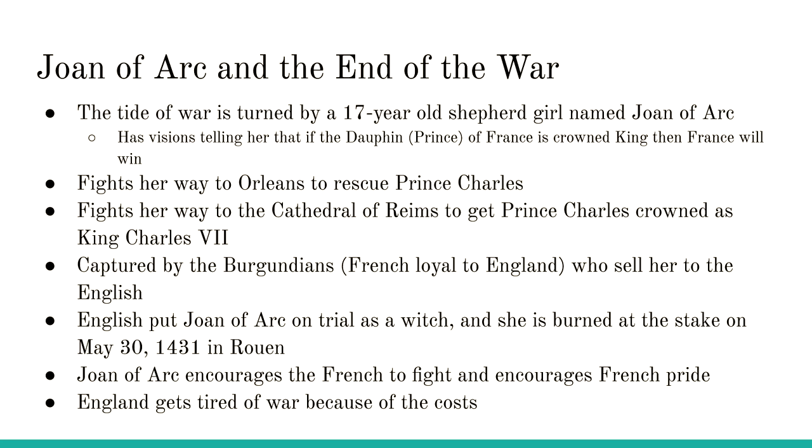So how did Joan of Arc lead to the French winning? She stimulated French pride, rallied the French troops, and showed the French that they had a chance. At the same time, the English people were demanding an end to the war because of the loss of life and the cost. By the time the war ended, the English Parliament refused to send any more money to France to help the king reclaim his lands. By the end of the war, only the coast of Normandy and the city of Calais remained English possession — the rest of France belonged to the French.